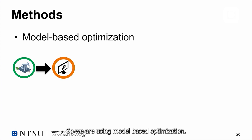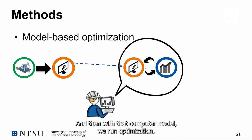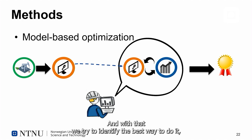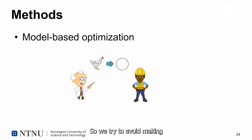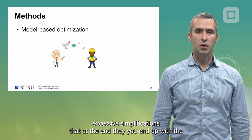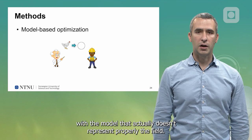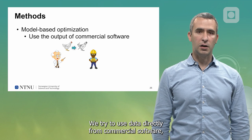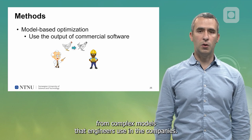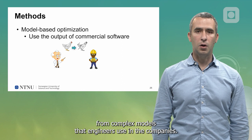We are using model-based optimization. We try to make a computer model of the system, and with that computer model we run optimization to find the best way to produce that field. We try to avoid making excessive simplifications that would result in a model that doesn't properly represent the field. We try to use data directly from commercial software, from complex models that engineers use in the companies.